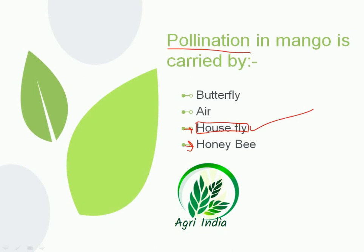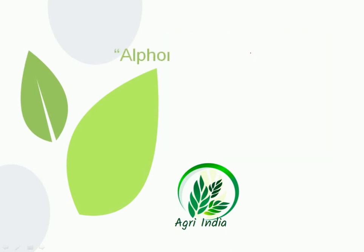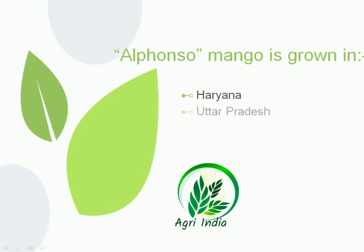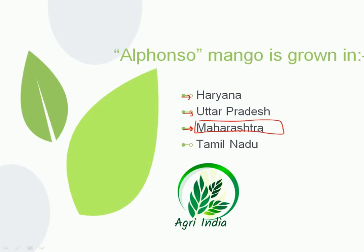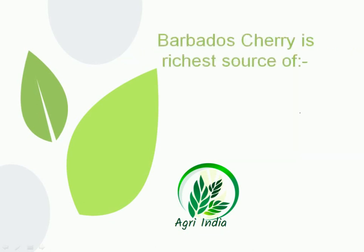Next question: Alphonso mango is grown in — options are Haryana, Uttar Pradesh, Maharashtra, and Tamil Nadu. In Haryana, the Chausa variety is grown; in UP, the Langda variety is grown; and in Maharashtra, the Alphonso variety is grown. Hence the correct answer is Maharashtra.